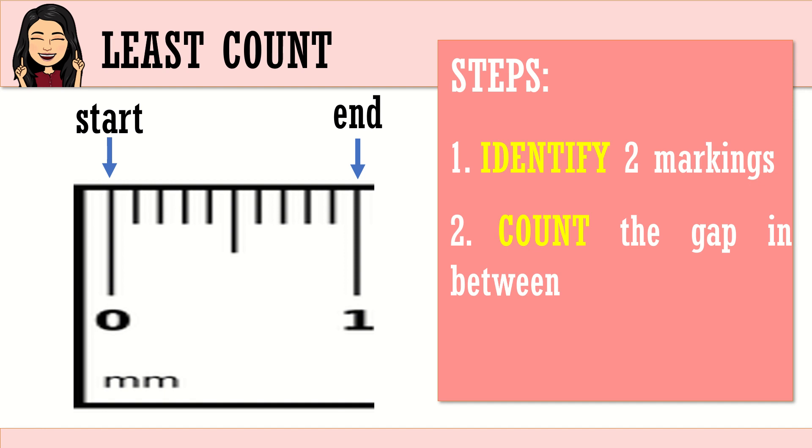Second step. We will count the gap in between. Let's count together. We have 1, 2, 3, 4, 5, 6, 7, 8, 9, and 10. There you go. That means we have 10 small divisions in between our two markings. Do you understand? Were you able to follow? I repeat. We have two markings here, and these markings are the major markings of your measuring tool. So, we have 0 and 1 for your start and end. Second, we count the gap in between or the small divisions in between. So, you have your 1 to 10 small divisions. Okay? Good.